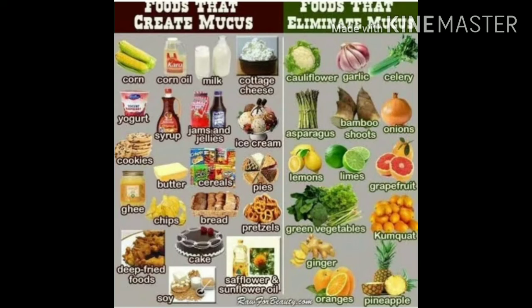Diet — foods not to be taken, as they increase mucus: corn, oil, milk, cottage cheese, syrup, jams, jellies, ice cream, cookies, cake, tea, cereals, pies, bread, soy, deep fried food, safflower, and sunflower oil. Foods that should be taken to reduce mucus secretion: cauliflower, garlic, celery, asparagus, bamboo shoots, onions, lemon, grapes, green vegetables, ginger, orange, and pineapple.